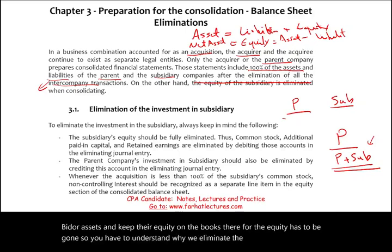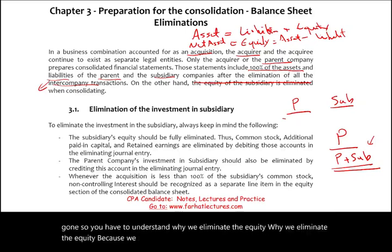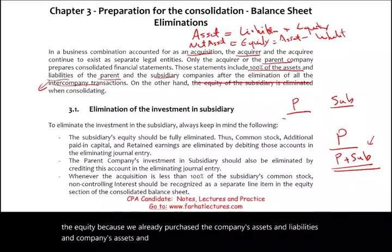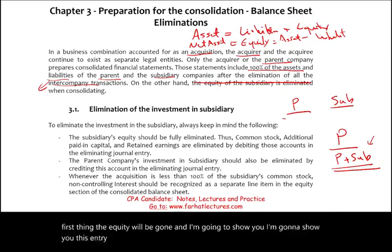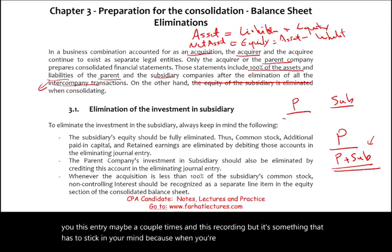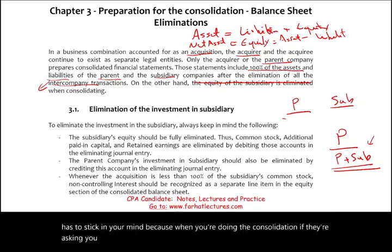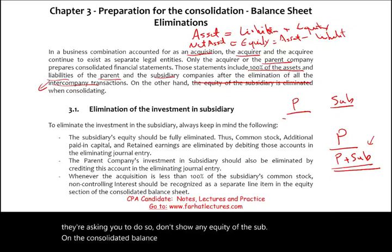We eliminate the equity because we already purchased the company's assets and liabilities, which include their equity. The equity will be gone — and this is something that has to stick in your mind. When you're doing consolidation, don't show any equity of the subsidiary on the consolidated balance sheet.